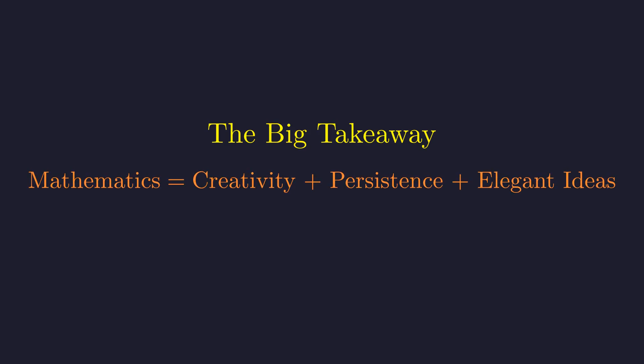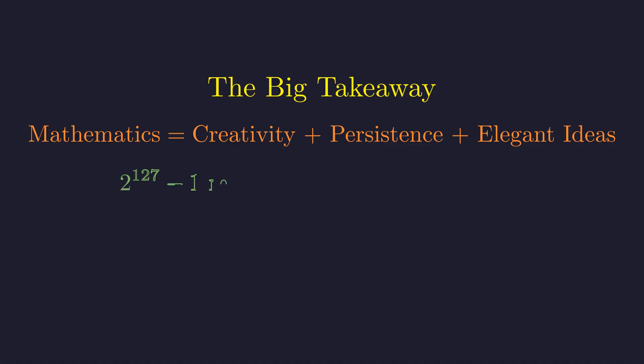Mathematics isn't just about crunching numbers. It's about creativity, persistence, and using elegant ideas to tackle problems that look impossible. 2 to the 127 minus 1 reminds us that the human mind, even without machines, can achieve incredible things.